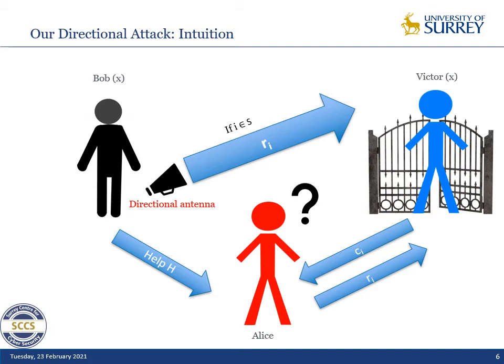The idea of using directional antennas for terrorist fraud is not completely new. It was proposed by Ahmadi and co-authors in a paper not so long ago, where they proposed similar attacks against anonymous distance bounding protocols — a specific class — focused on the initial message exchanges, whereas we focus on the timed exchanges. This way we can cover way more protocols and propose a new strategy.